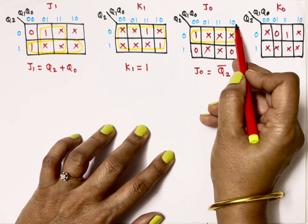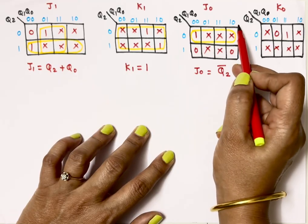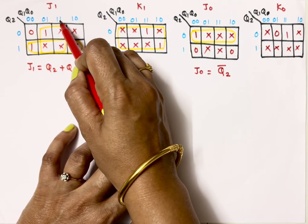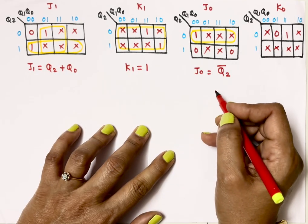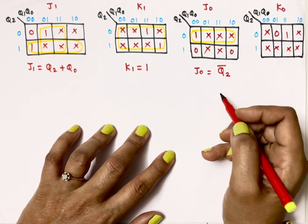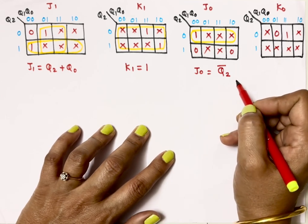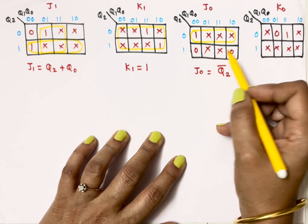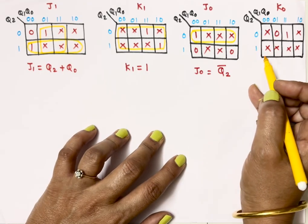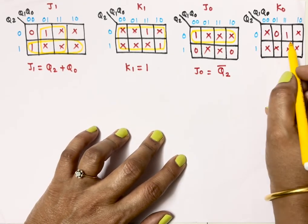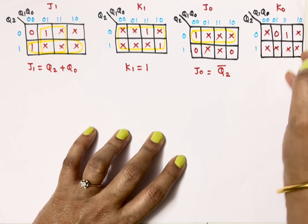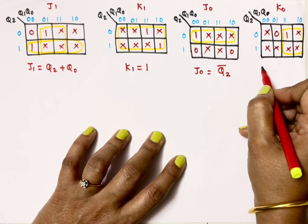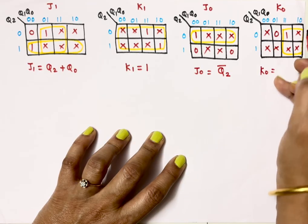We don't take Q1 and Q0 in the J0 equation because their values differ across the group. Remember: if two corresponding variable values are the same in a group, only then can we include that variable. For K0, we can make a group of four cells and the equation becomes K0 = Q1. I have prepared a separate video on basic K-maps; the link is in the description box.